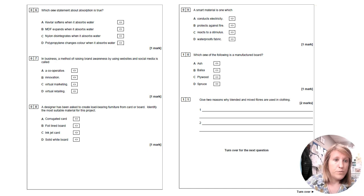Which statement about absorption is true? Kevlar suffers when it absorbs water. No it doesn't. It's really resistant to all that sort of stuff. MDF, which is a manufactured board, expands when it absorbs water. Yes, it does. The water can get inside the wood and can cause it to kind of go nasty and kind of break down, which is not ideal. Nylon disintegrates when it absorbs water. Well that's wrong because if you tried to wash nylon tights and they disintegrated, that wouldn't be ideal. And polypropylene changes color when it absorbs water. No it doesn't. It's not a smart material. So the correct answer there is MDF.